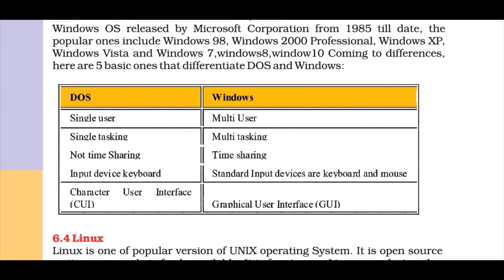DOS is not time-sharing — only a few users can work with it due to the command line. Windows makes time-sharing easier. For input devices, DOS uses only a keyboard with character-based CUI interface, while Windows supports mouse, scanner, keyboard and more. Output devices in Windows include speakers and monitors, and Windows uses a graphical user interface (GUI).